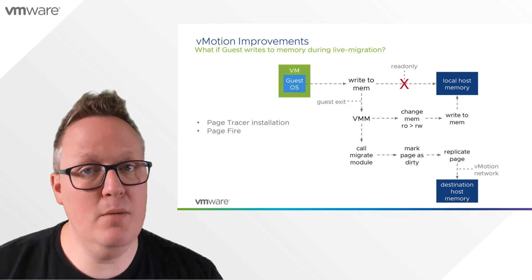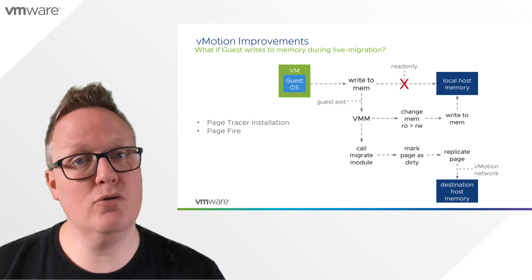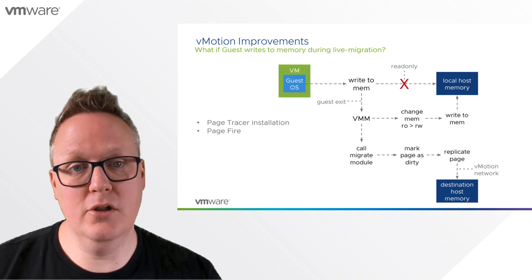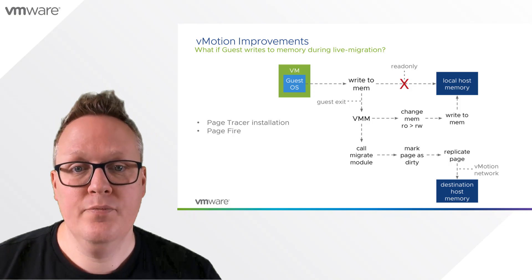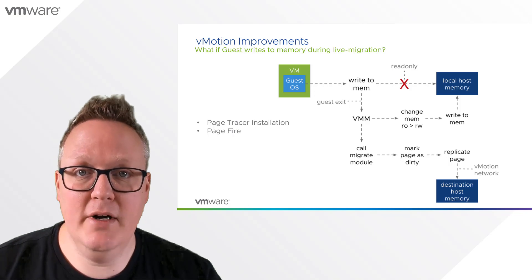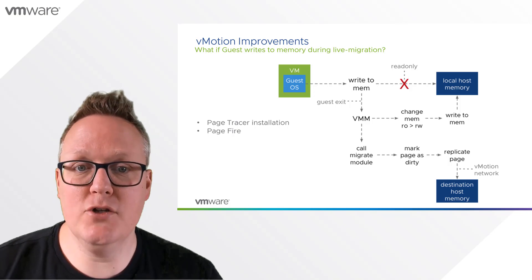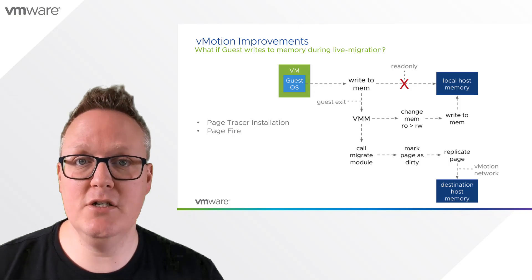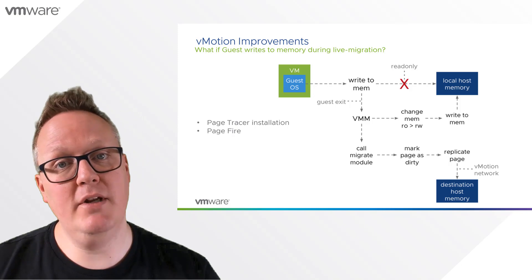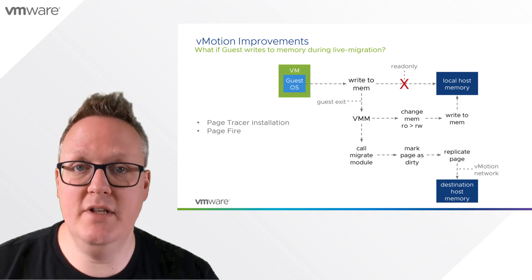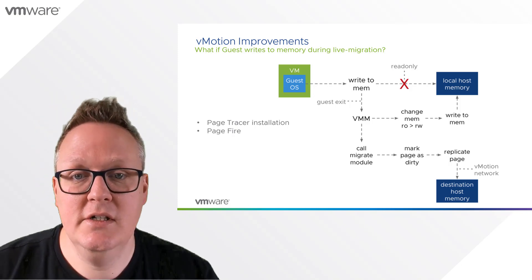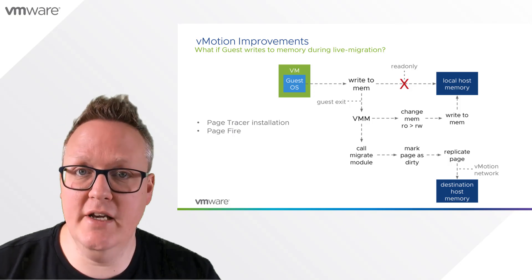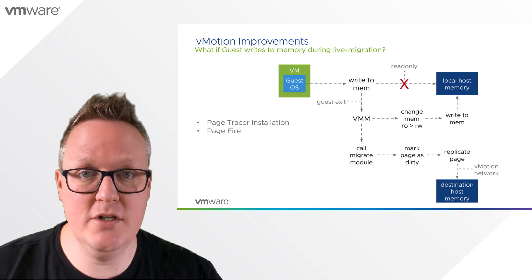The guest OS reaches out to VMM, the virtual machine monitor process. It will write the memory to the local host memory, and at the same time call out the vMotion migrate module and mark that page as dirty. Dirty meaning the memory page is being overwritten by the guest OS, and we now need to replicate that page to the destination ESXi host. The key takeaway here is the page tracer installation and the page fire.